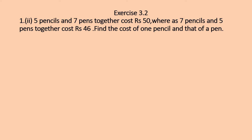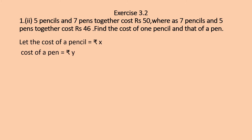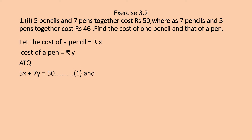First step: always write down the unknowns you have taken. Let the cost of a pencil = ₹x and cost of a pen = ₹y. According to the question, 5 pencils and 7 pens together cost ₹50, that is, 5x + 7y = 50. Number this as Equation 1.